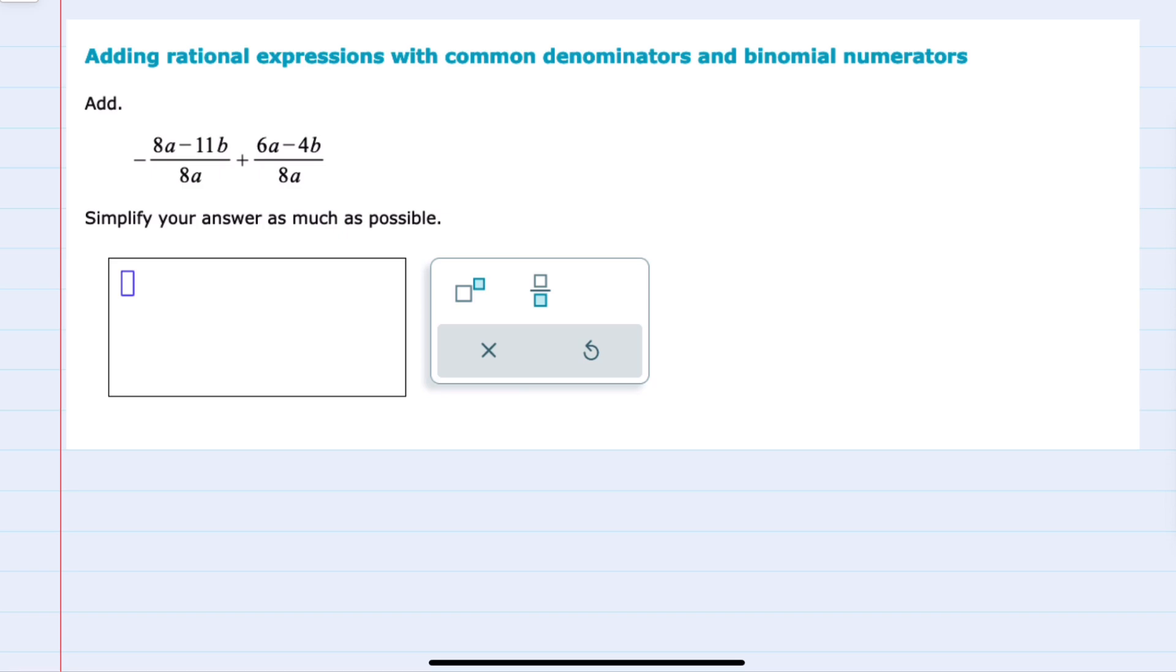In this example we're asked to add these two rational expressions and they do have a common denominator. So that means that we will be able to add without getting a common denominator since it's already there. And I will just need to be careful with any signs outside of these rational expressions to be sure that they're applied to everything inside.